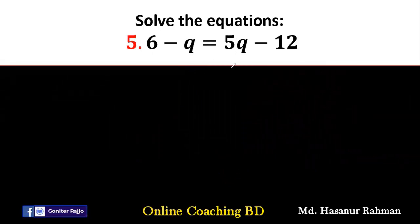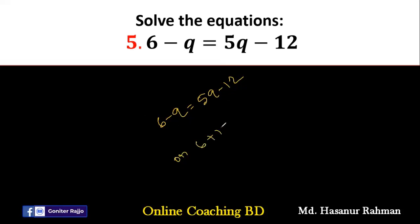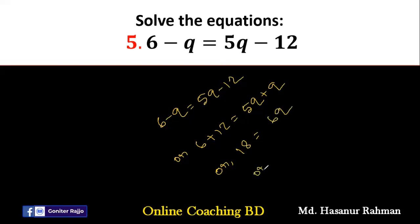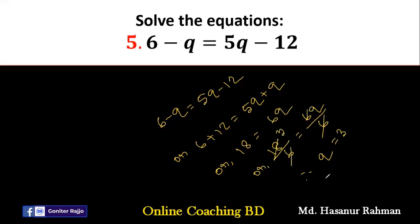Now number 5: 6q minus 2 equal to 5q minus 12. If we move the constants to one side and variables to the other: 6 plus 12 equal to 5q plus 2q. So 6 plus 12 is 18, and 5q plus 2q is 6q. Now divide both parts by 6: 18 divided by 6 equal to 6q divided by 6. That gives us q equal to 3.